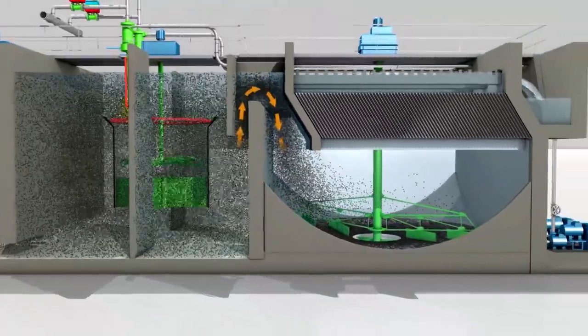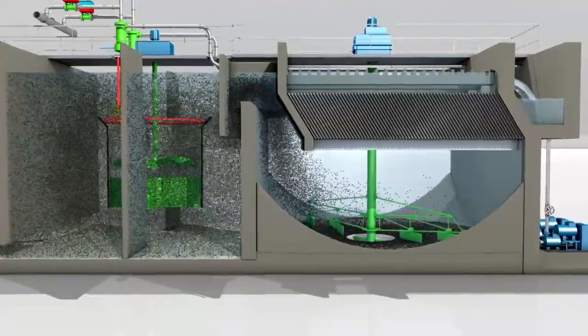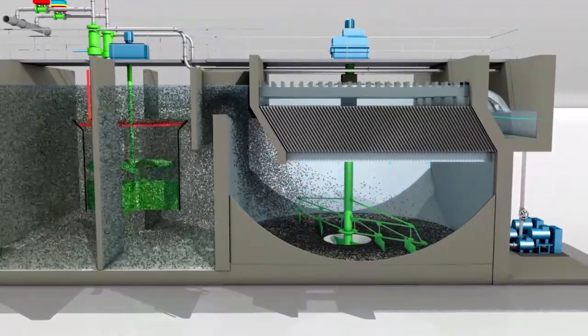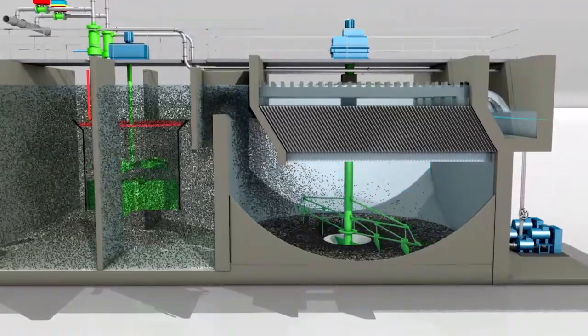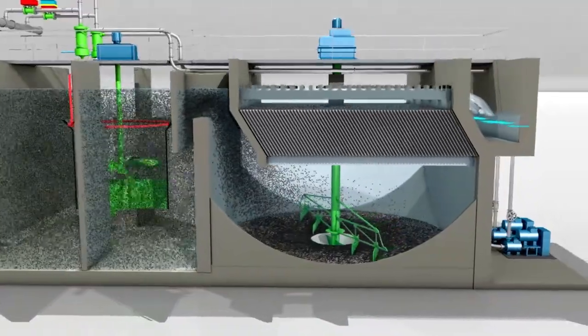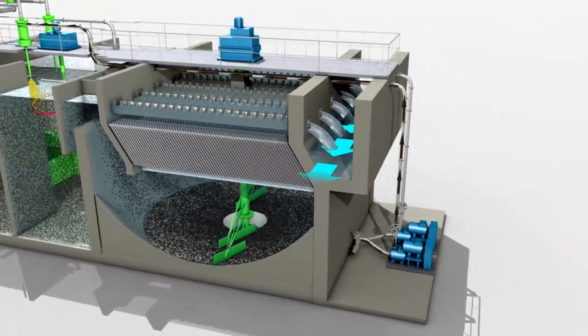The flocculated water then enters the settling tank. The micro sand ballasted flocks settle quickly, while clarified water rises through the lamella and exits the tank via the effluent collection launder. Typical rise rate is 30 to 40 meters per hour, or 12 to 16 GPM per square foot. The micro sand ballasted flocks are scraped to the center pit of the settling tank.